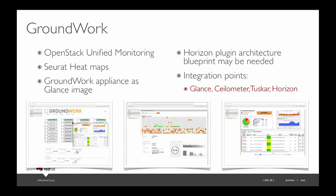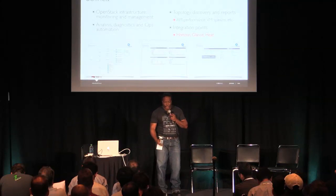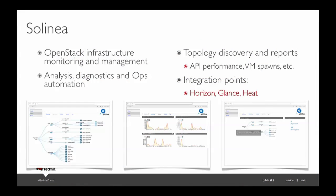Groundwork is another company — strong monitoring, already a Red Hat partner. We're talking to them about bringing what they have today over to Triple O. They have cool heat maps and the ability to image-map a node for presentation based on where you are in the image. We're working with them to possibly do some plugins upstream, Glance for their application — you can deploy Groundwork as a VM as a core service within OpenStack for the production cloud. Also Solania — some ex-Cloud Scaling guys who started this company. They do monitoring a different way: they look at all the OpenStack logs to do discovery and can answer questions like how's my cloud, how are the core services doing, what's the API performance, VM spawns — really cool stuff that matters to an operator at scale.